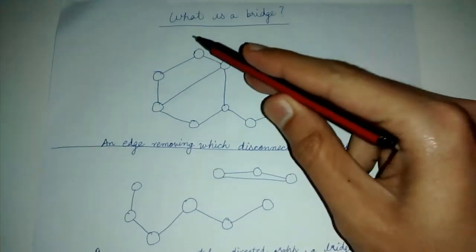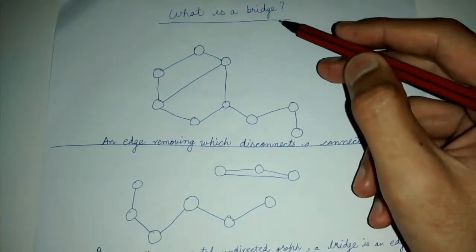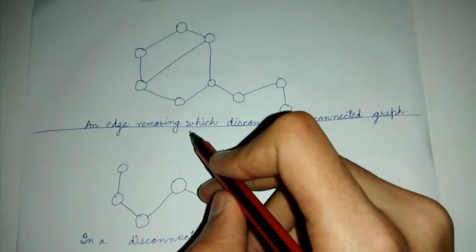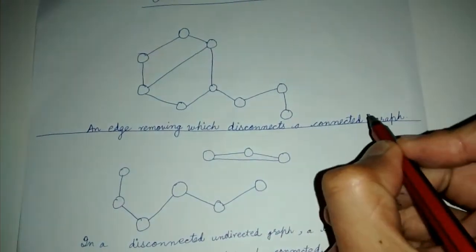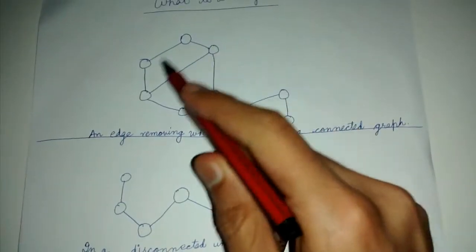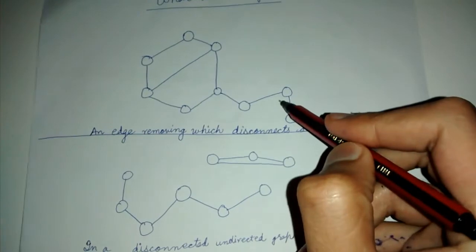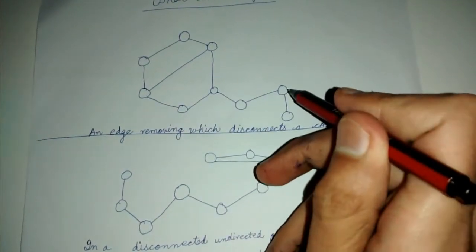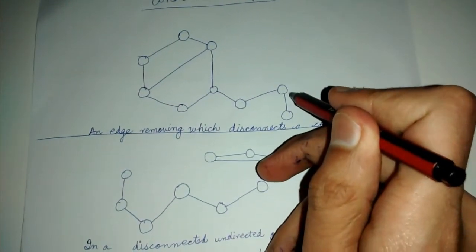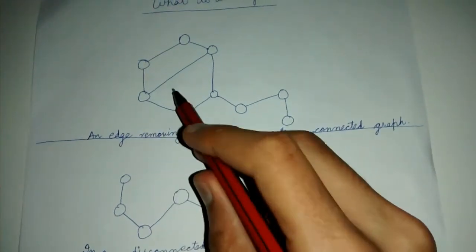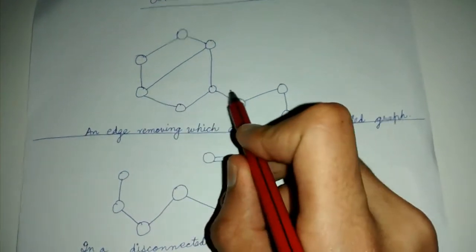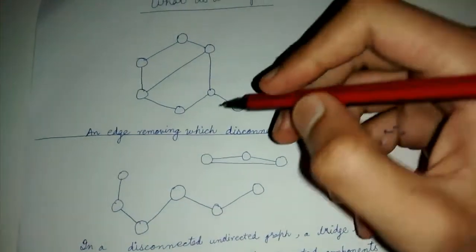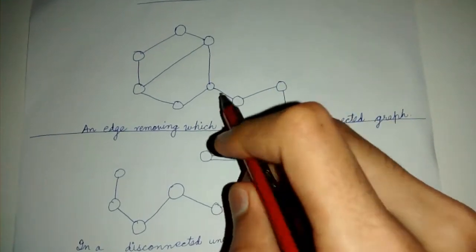Today we'll be looking at what is a bridge in a graph. A bridge is an edge removing which disconnects a connected graph. This is a connected graph in which there is a path between any pair of edges, so any edge removing which will disconnect this connected graph is a bridge.